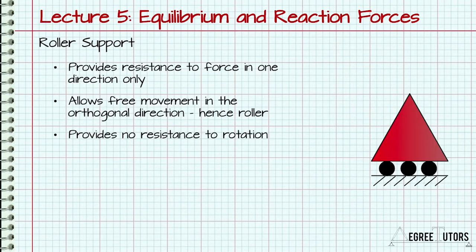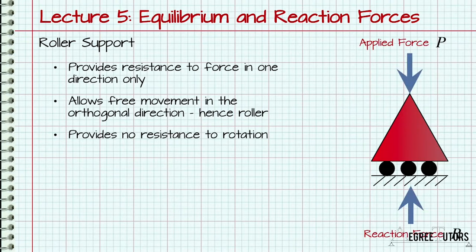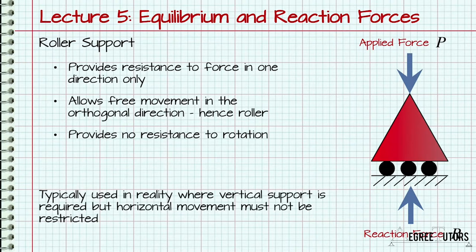A roller support provides resistance to forces in one direction only. In other words, movement in one direction is completely restricted while movement in the orthogonal direction is permitted. This support always allows rotation. This means that no reaction moment can be generated by this type of support. In reality, roller supports are often employed where a structure must be supported vertically, but movement mustn't be restricted horizontally.